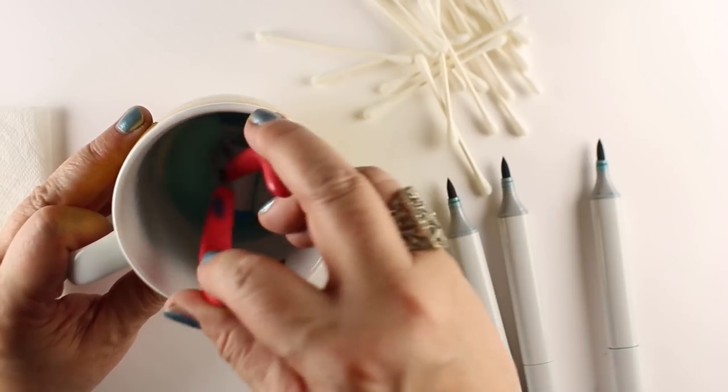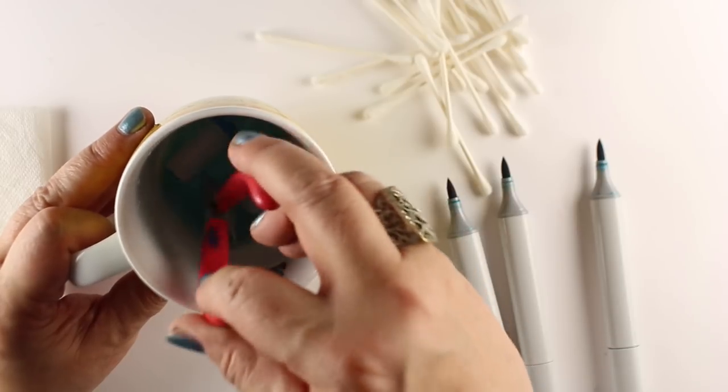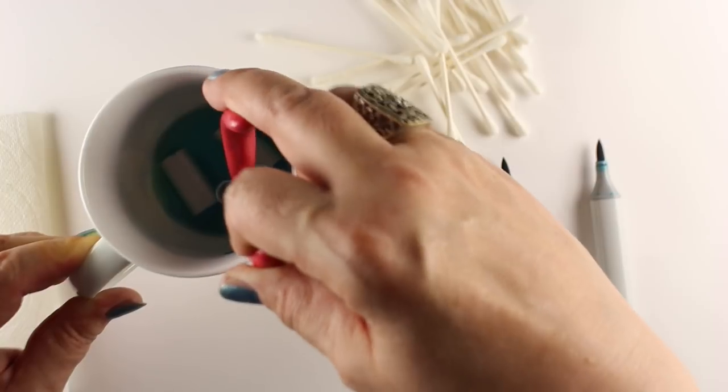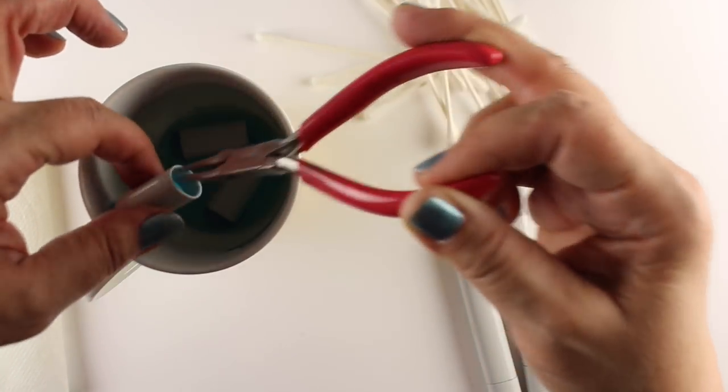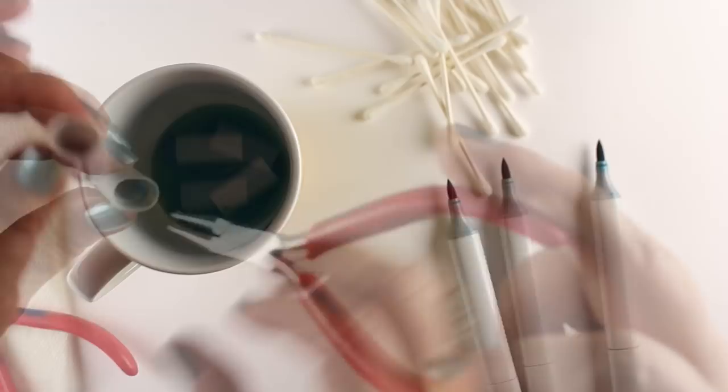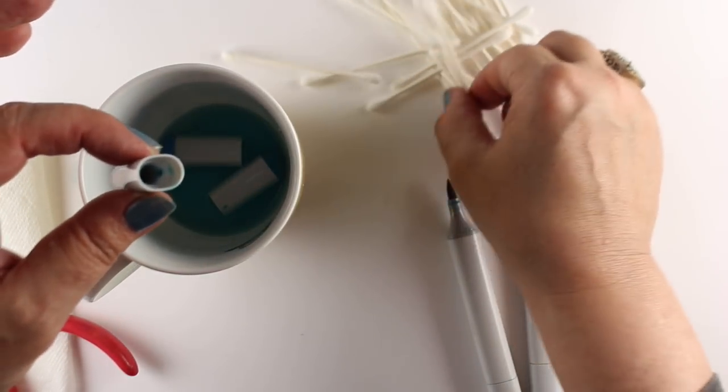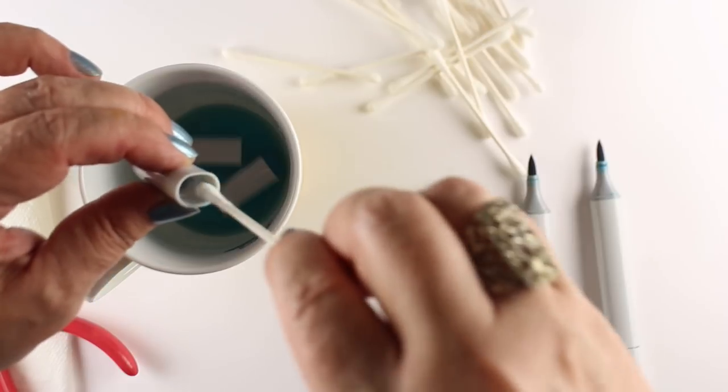So when you're doing this, you're only going to clean the caps with it. Don't clean the marker bodies with it. Don't clean around the nibs with it because that could hurt your markers. Especially don't put any in your colorless blender marker. Don't think you're getting away cheap by doing that because the colorless blender fluid itself is different than this.